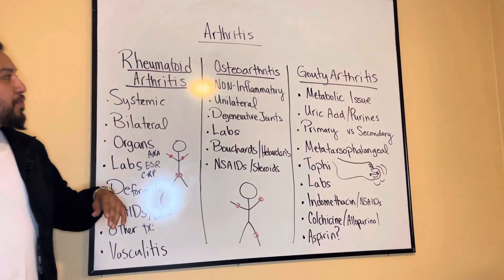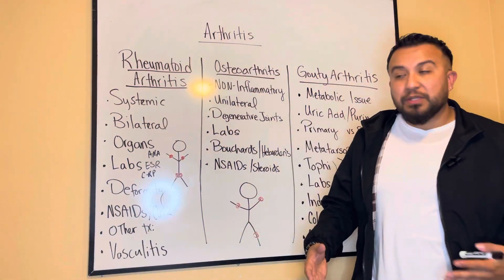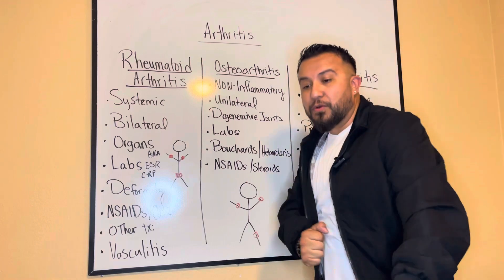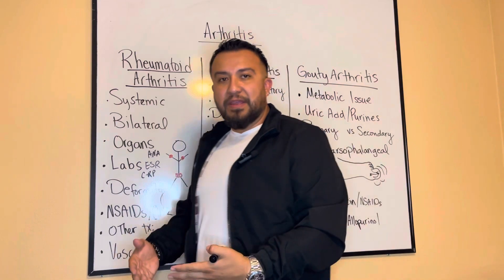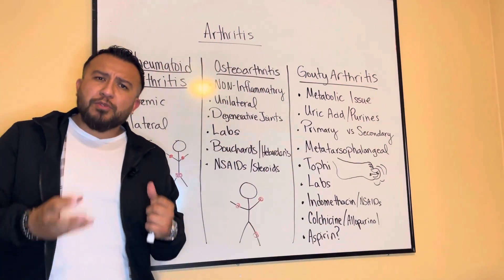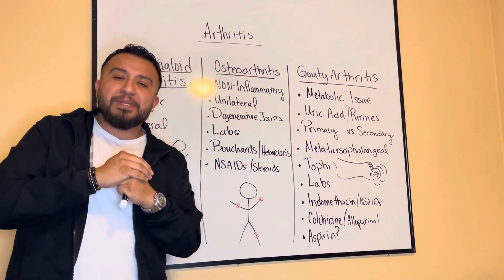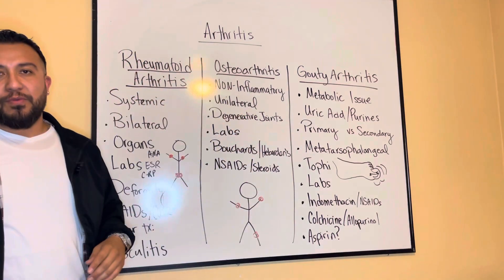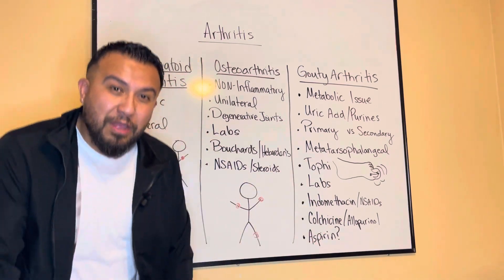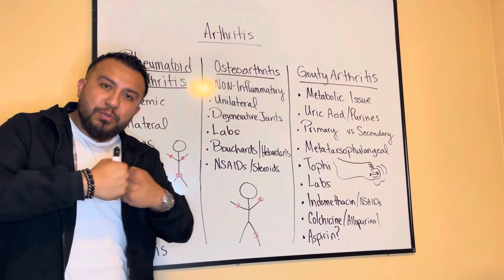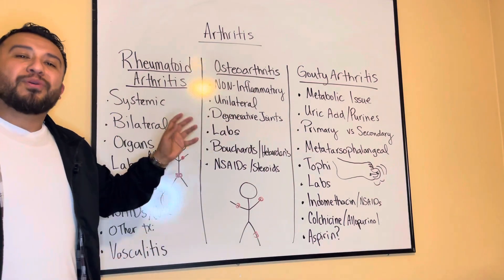The next type is degenerative joint disease, or osteoarthritis. For example, someone who cleaned houses their whole life — always wiping windows and mopping floors — those articulating joints break down when used repetitively. The body tries to heal itself, but scar tissue develops on the articulating surfaces and limits mobility. That's osteoarthritis. It can also be secondary to injury or occur in people who are obese, because extra weight on the knees, ankles, and hips leads to joint breakdown — that's why we call it degenerative joint disease.